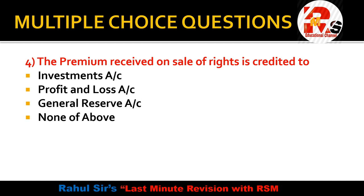Next question: The premium received on sale of rights is credited to — investment account, profit and loss, general reserve, or none of the above? The right answer is Profit and Loss. When you receive premium on sale of rights in investment accounting, it is credited to the profit and loss account.